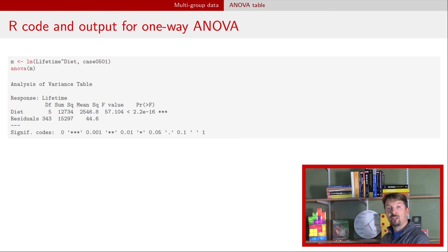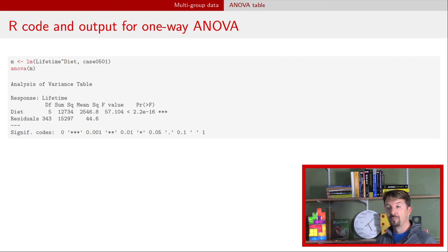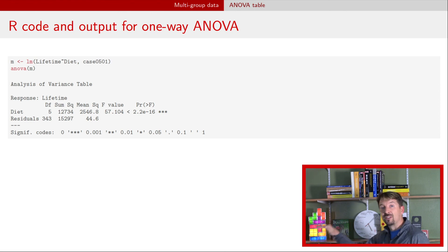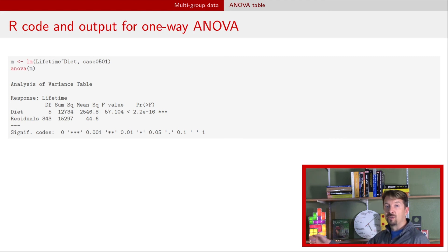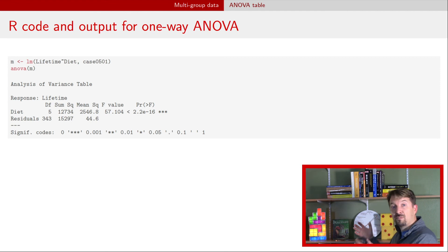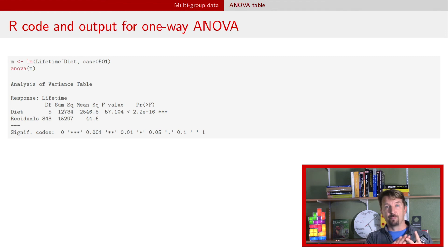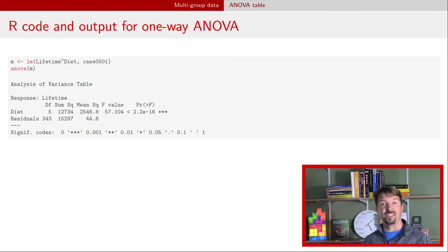Here's the ANOVA table in R, which looks very similar to what we've seen. R doesn't include the total row, but you can recreate it by summing the degrees of freedom and sum of squares for diet (factor A) and residuals. This small p-value provides evidence against the null model — the model that says means are all the same and errors are independent, normally distributed, with common variance. You should still check diagnostics to ensure no other assumptions are violated before concluding the means are not the same.